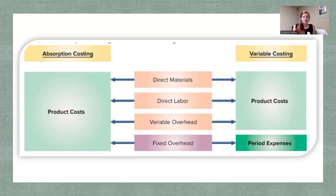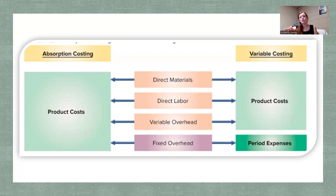Here's a diagram to show what we've talked about. For absorption costing, the product cost includes all direct materials, all direct labor, and variable and fixed overhead. For variable costing, it includes all of those except fixed overhead — fixed overhead goes straight to expenses. If a company uses variable costing internally, they would need to keep separate financials for external reporting to meet GAAP requirements, which takes some extra effort.